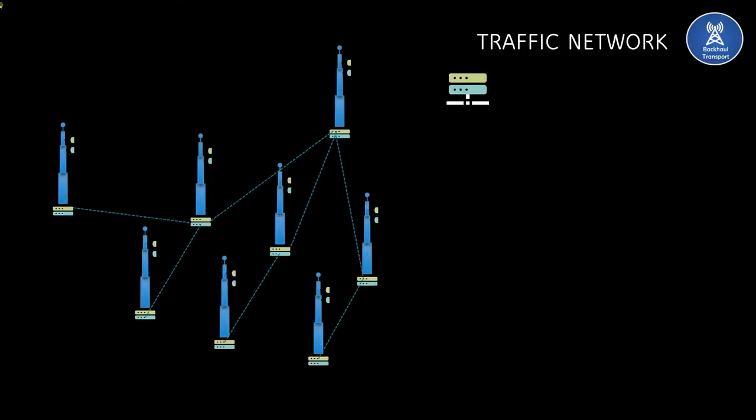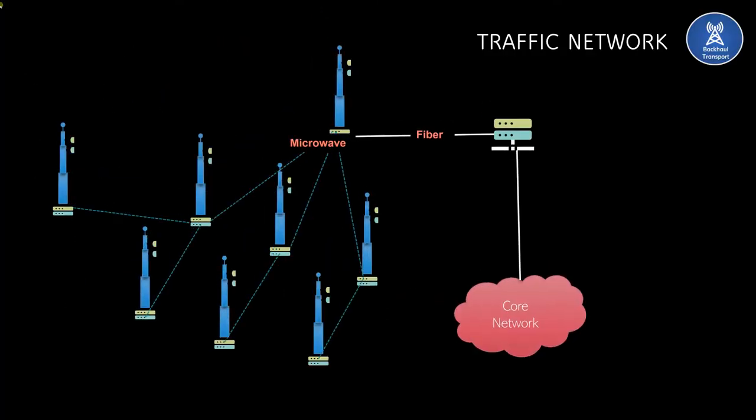Let's start with the traffic network. The dominant media in the traffic network are microwave, fiber optics, copper, and satellite communication. Among these four, predominantly used are microwave and fiber optic communication. Still 55% of the sites across the globe are working on microwave.